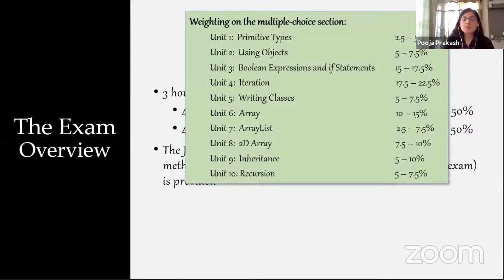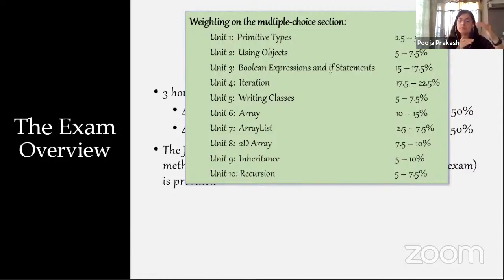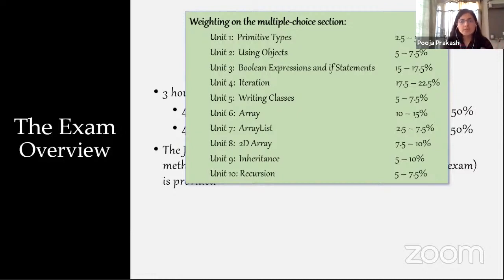Regarding the MCQ section weightages by unit: Unit 1 has a weightage of 2.5 to 5 percent; Unit 2 covers 5 to 7.5 percent; Unit 3 — iterations — is 15 to 17.5 percent. Iterations is where you repeat a certain task a number of times. If you've done a for loop, while loop, or do-while loop, that's all part of iteration. Iterations cover a big chunk: 17.5 to 22.5 percent.